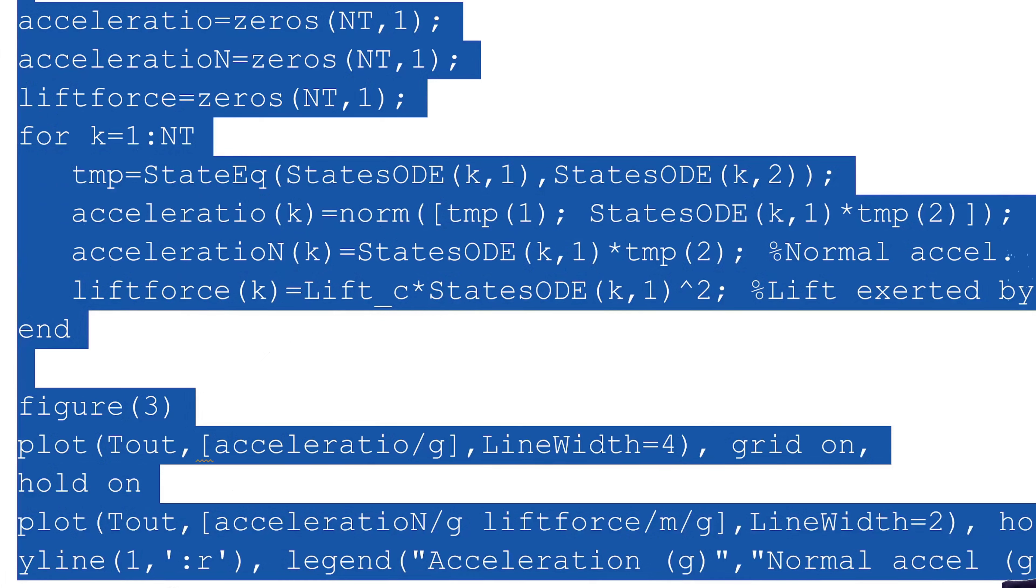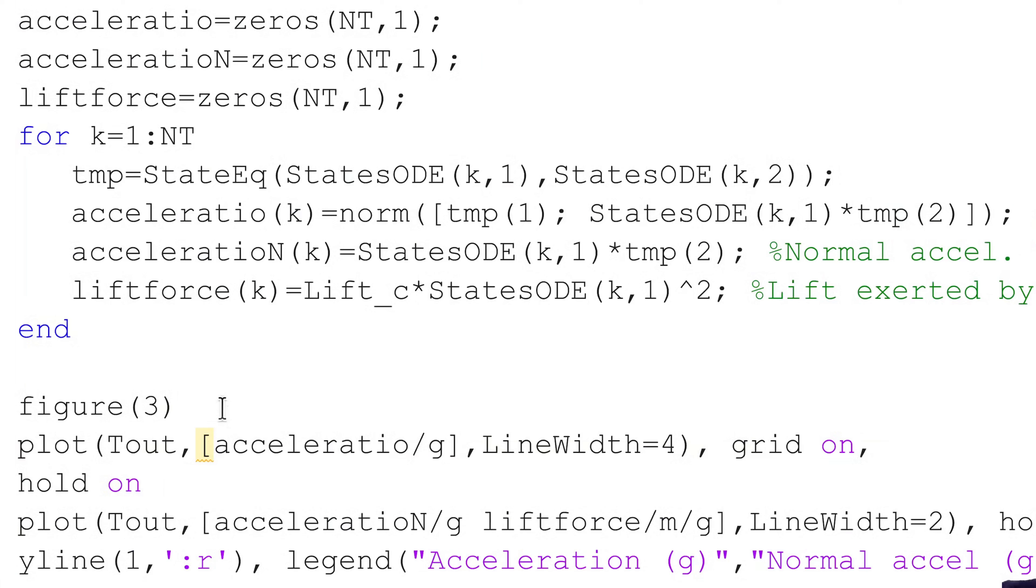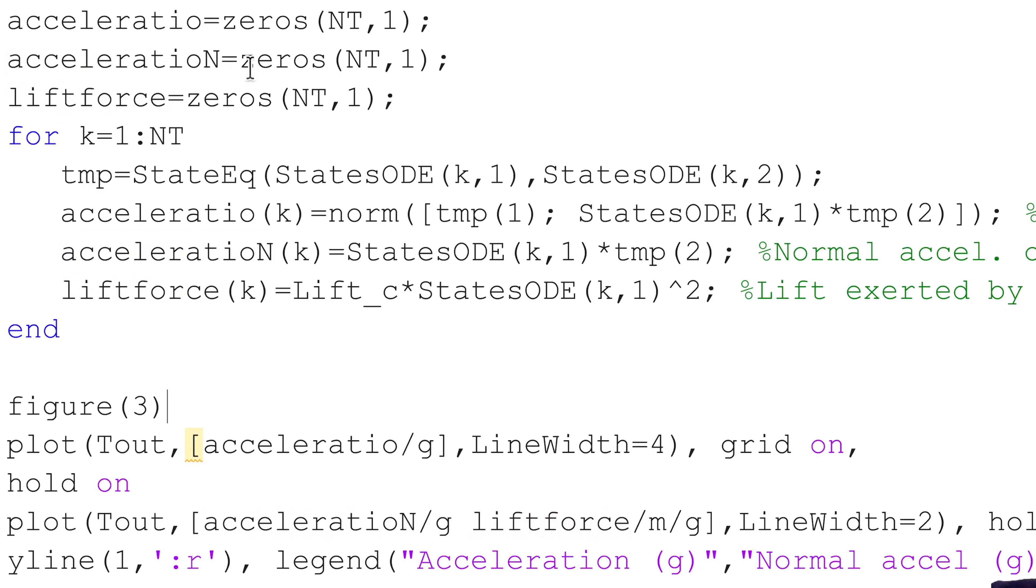The next fragment of code will plot the accelerations. Why? Well, because accelerations are proportional to forces. So if accelerations are big, maybe something breaks in the aircraft. So it's of interest to plot them. And in fact, we will plot the modulus of the acceleration vector, the normal acceleration, and the lift force. If the lift force, which must be provided by the wings, is excessive, the wings may break.